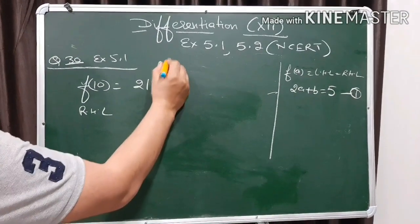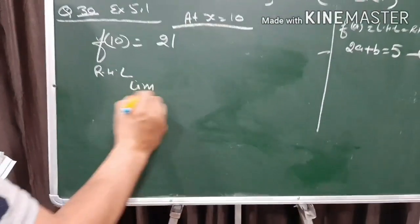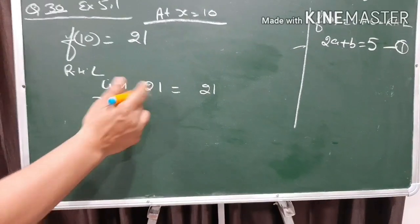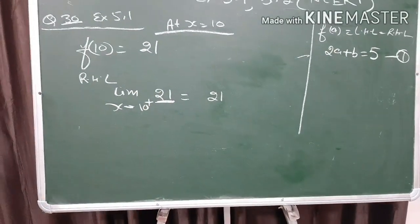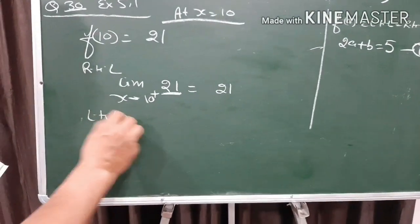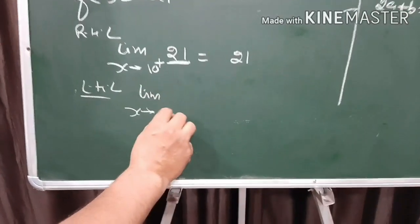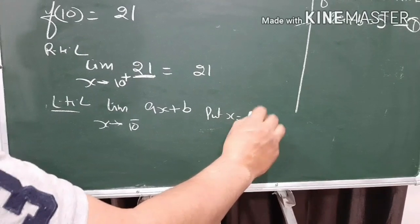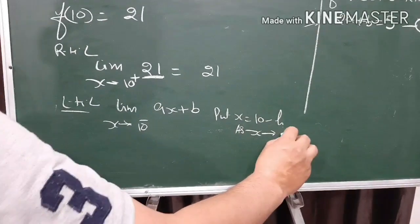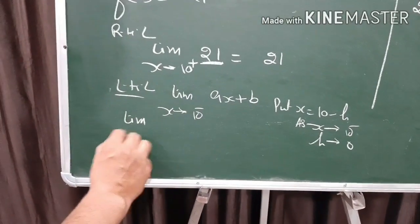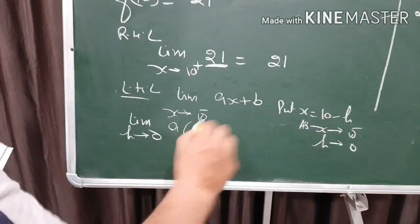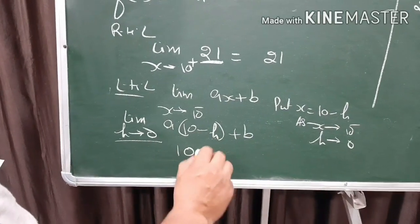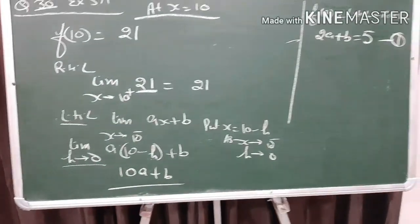The right hand limit at x equals 10 is limit x approaches 10 positive of 21. Since the limit does not change a constant term, the right hand limit remains 21. For the left hand limit, the function is ax plus b. We put x equals 10 minus h; as x approaches 10 negative, h approaches 0. This becomes limit h approaches 0 of a times (10 minus h) plus b, which gives 10a plus b.